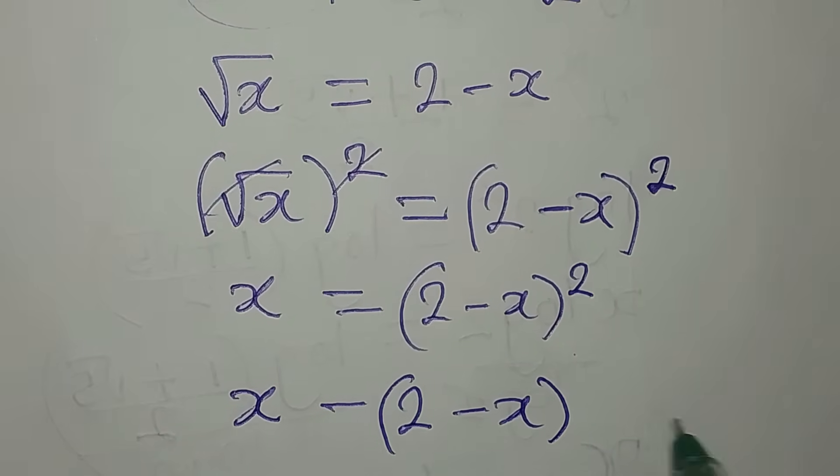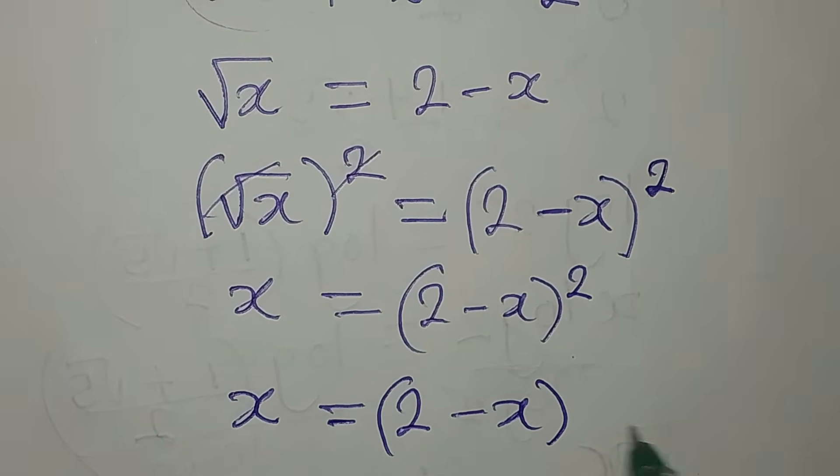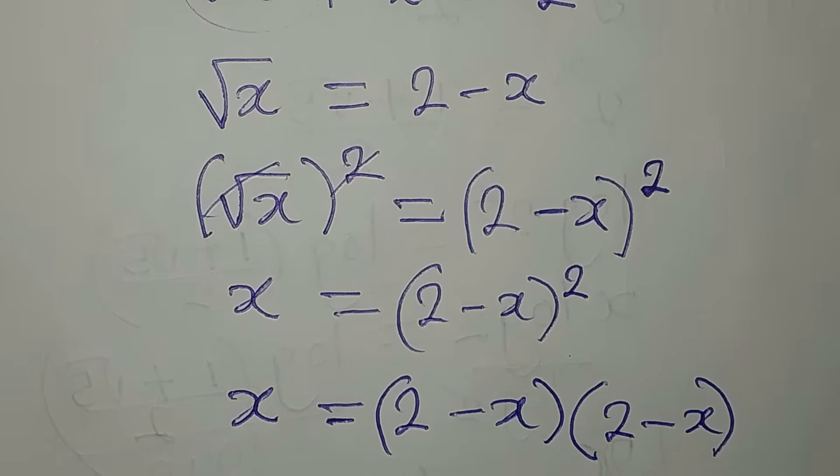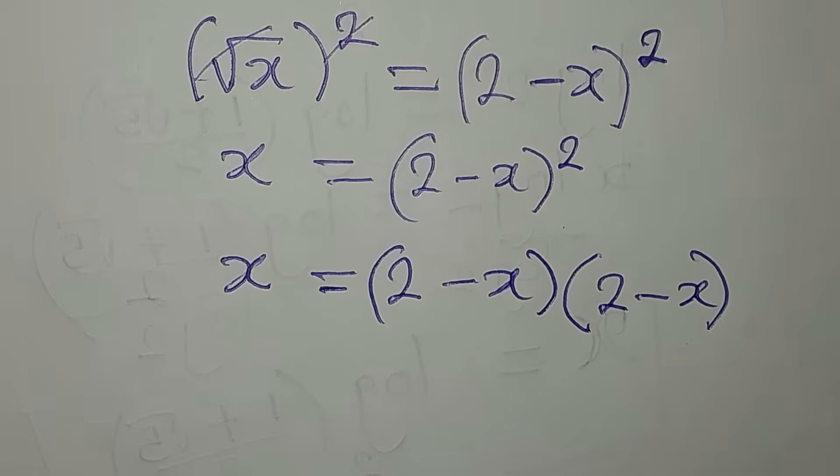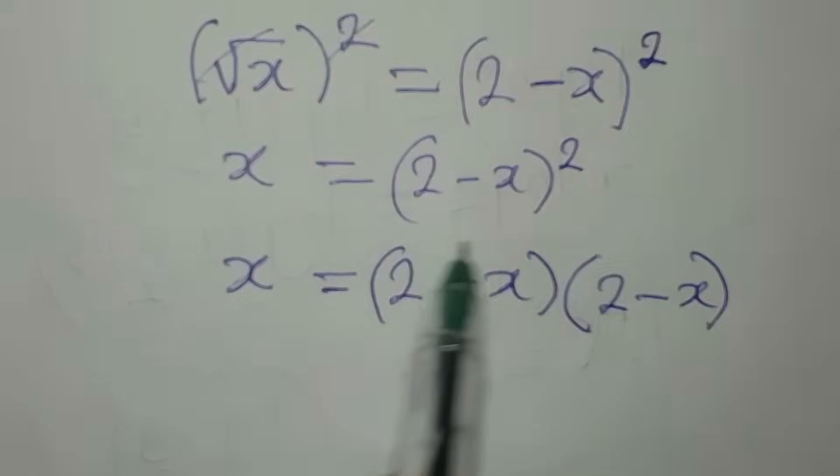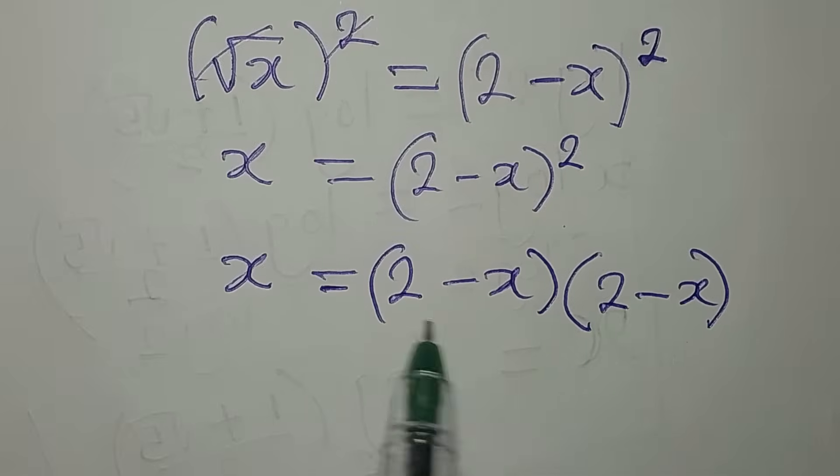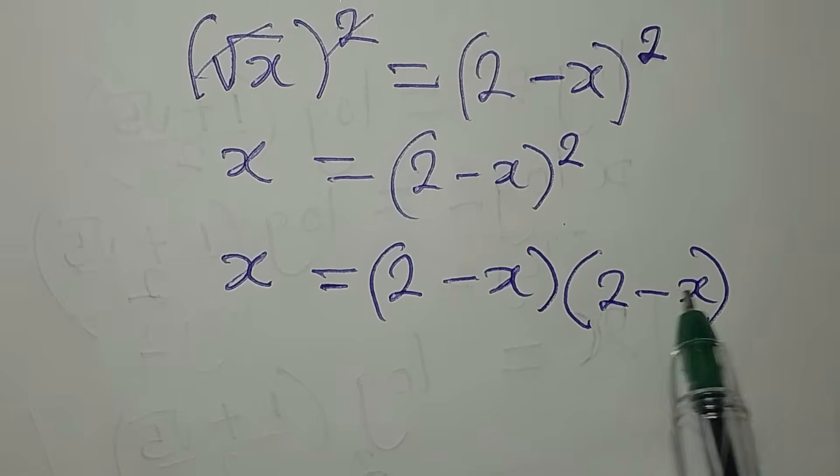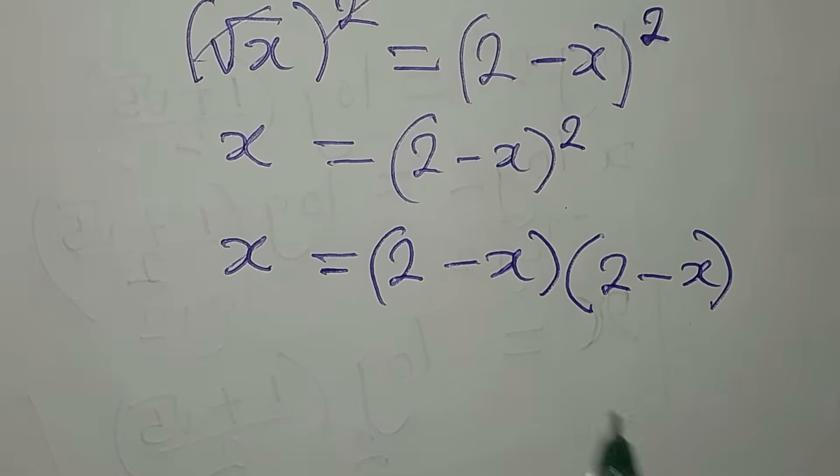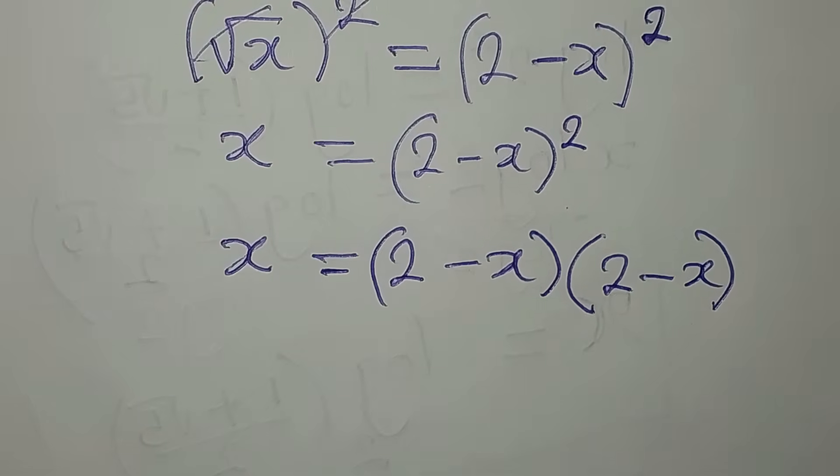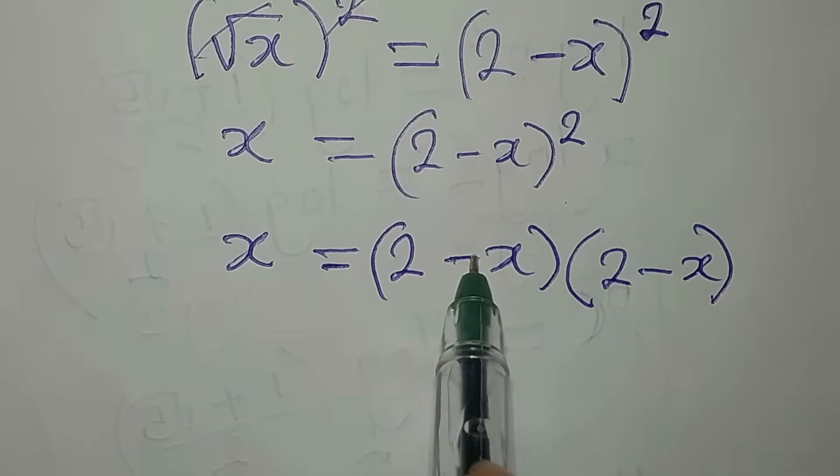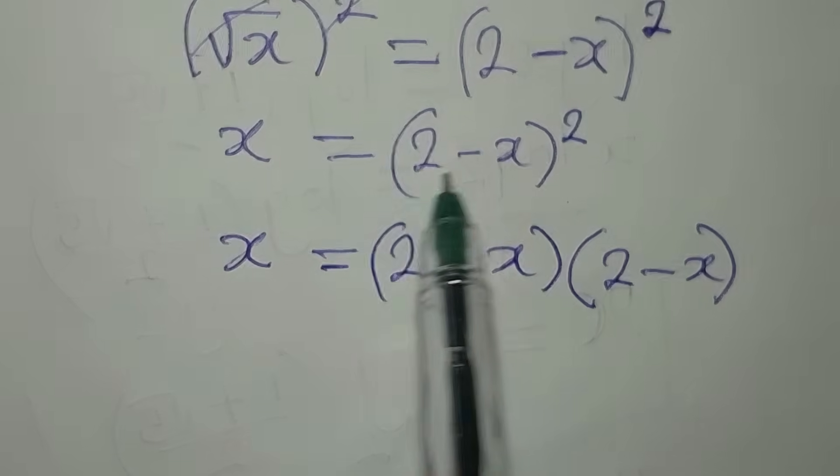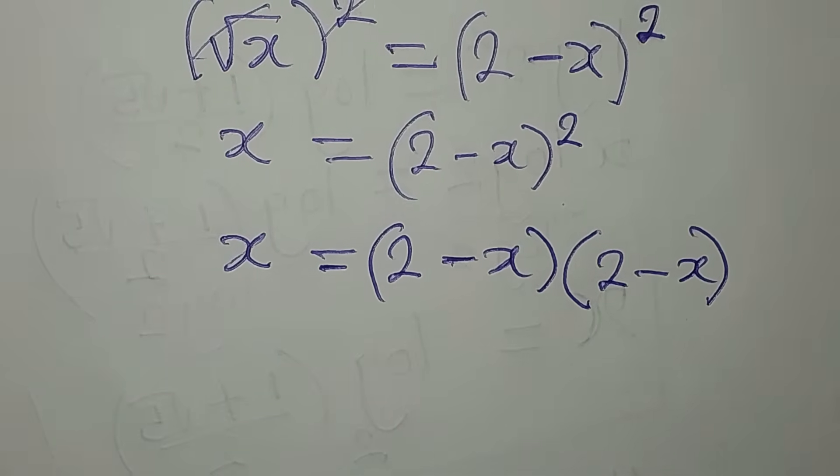A couple of my students will ask me that since we are squaring what we have here, why don't we have different signs? But that is not correct because we are not dealing with difference of two squares. What this means is that 2 minus x is appearing in two places.